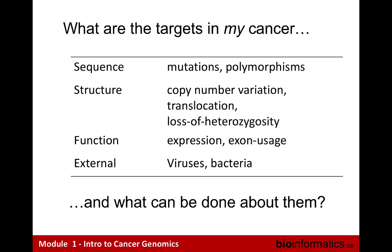The first part of the talk was the overview of the landscape of cancer genomics. For a single patient, the question is: what are the targets in my cancer? How is it different from other cancers in sequence, mutation, polymorphisms, structure, copy number alteration, translocations? How is it functionally different — what genes are expressed, what genes are disrupted? And are there external forces? Is there viral infection? How is this cancer different from other cancers of this type, and not only what is the target list but what can actually be done about it?